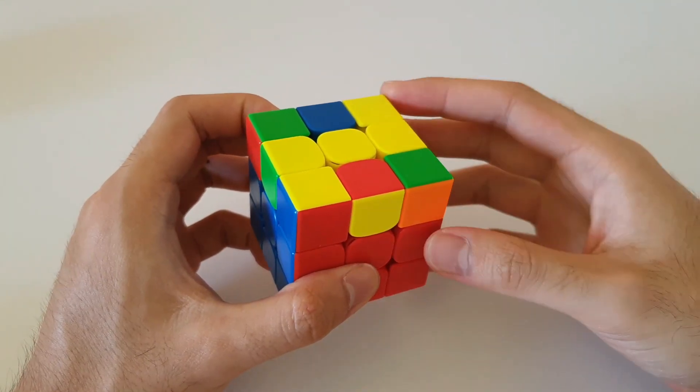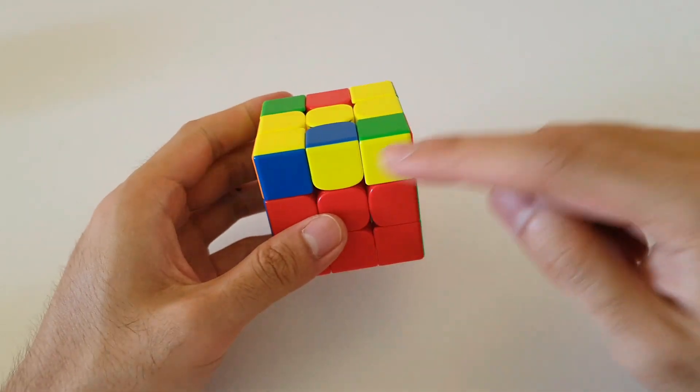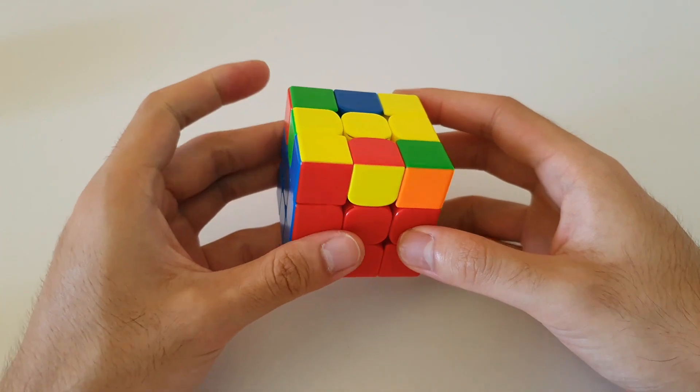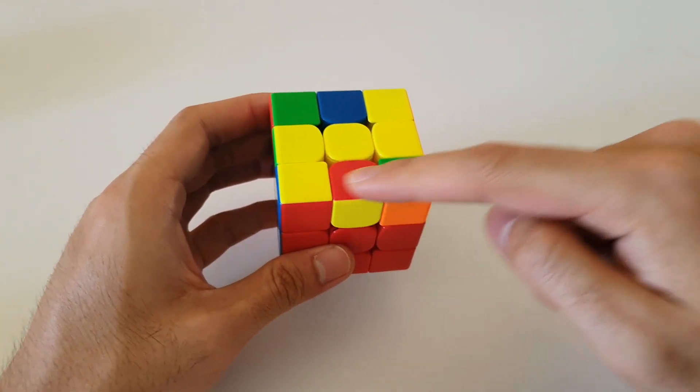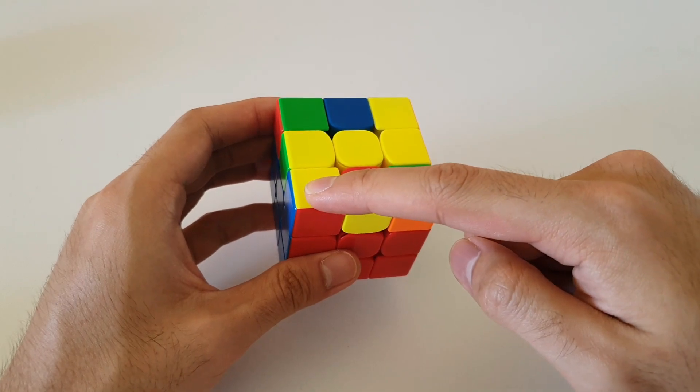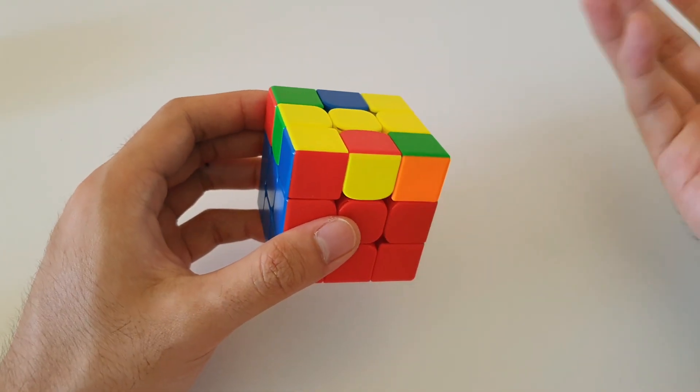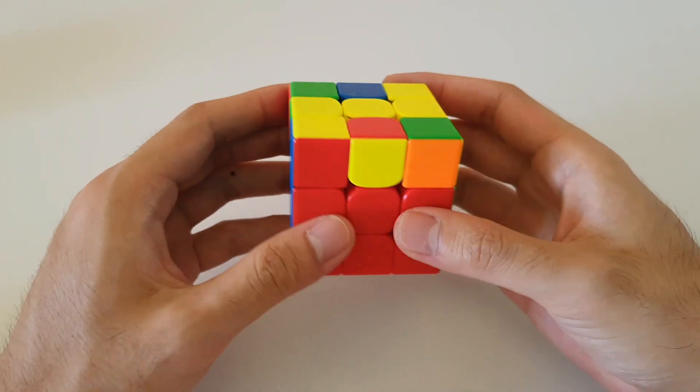Moving over to the mirror image of the previous case, which is this one here. Once again, you want to look for the 2x1 bar on the side and you want to put that at the back like this. Now you want to look at the front corner colors and we notice that the one on the left is yellow, which means that this is a left-handed case. You can do the exact same algorithm as I've shown previously but mirrored for your left hand.